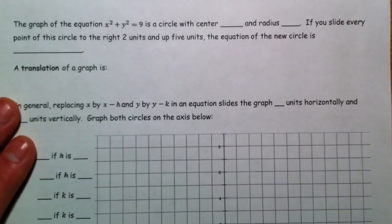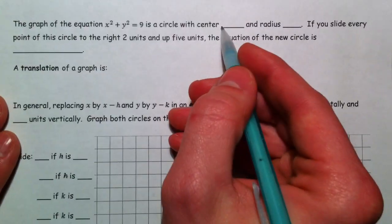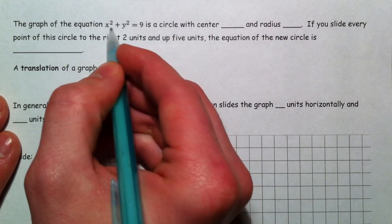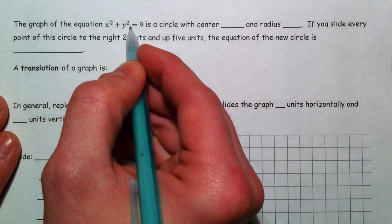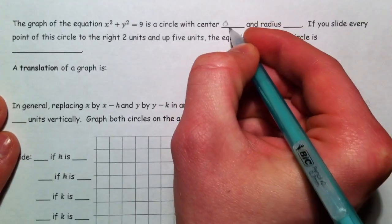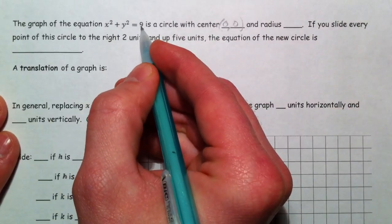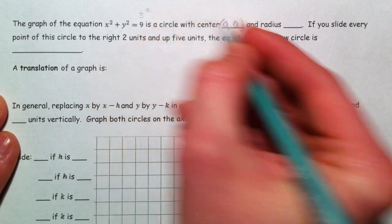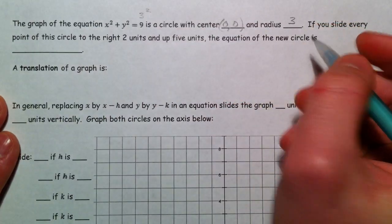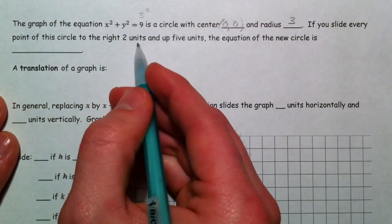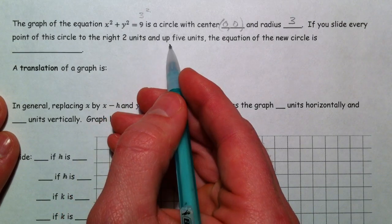So, moving on. Graph of the equation x squared plus y squared is a circle with center. Notice there's no x minus h or y minus, so this center is 0, 0. And the radius is still r squared, so this is 3 squared, so the radius is 3.